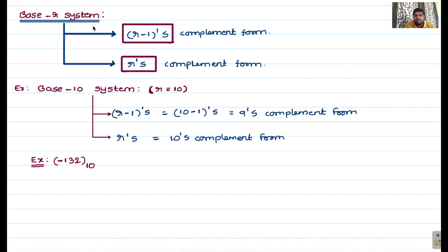For any base-r system, we can define two forms of complement: the r-minus-one's complement form and the r's complement form. We already discussed this for the binary system, where we define one's complement and two's complement. For example, if you consider the decimal system, that is base-10, we can define nine's complement form as well as ten's complement form. Nine's complement is the r-minus-one's complement where r equals 10.